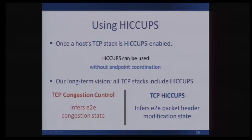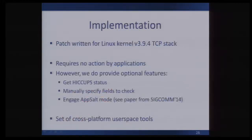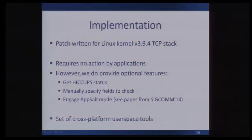To use Hiccups, a host TCP stack has to be enabled with it. But once that happens, Hiccups can be used without endpoint coordination. Our long-term vision is to get this into TCP — if all stacks included it, similar to how congestion control helps TCP infer end-to-end congestion state, Hiccups could help TCP infer end-to-end packet header modification state. For our implementation, we wrote a patch for Linux kernel version 3.9.4 that alters the TCP stack to enable Hiccups. This requires no action by applications, but if they want, we provide additional optional features such as getting the status from the check, manually specifying certain fields to check, and engaging 'app salt mode' for additional protection on the hashes.